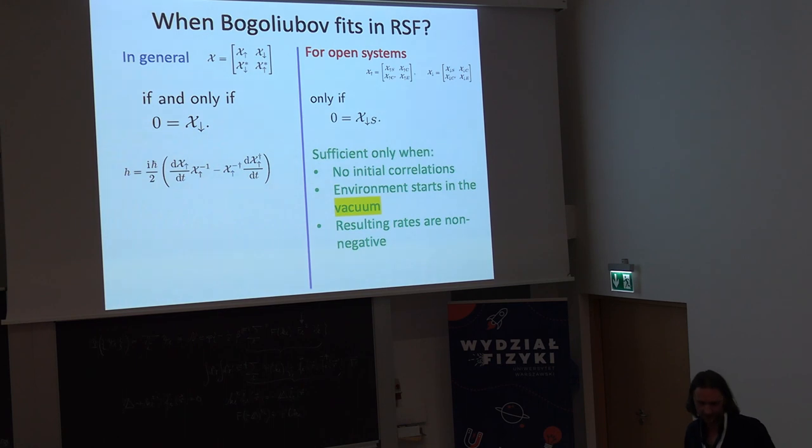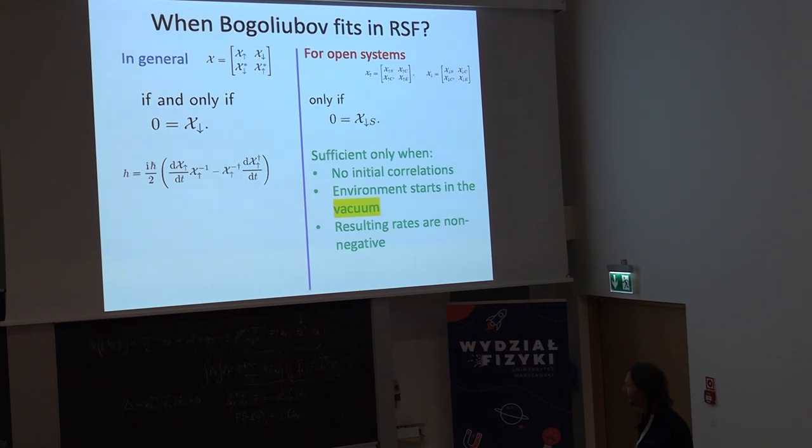But what is interesting is that if we consider this kind of splitting and decide to describe only the system part in this reduced formula. So, environment is environment. We just describe the system. Then, apparently, the same condition only applies to one block, which is not so severe. And also, this is not a sufficient condition. It's not necessary. It can be sufficient under certain assumptions like the environment needs to start in the vacuum state. And there are no initial correlations between the environment and the system. And, most importantly, if we work that out, we have some rates like these damping rates and things like that. And they need to be consistent with the Lindblad equation. So, for instance, the damping rates cannot be negative. They have to be non-negative. And if this happens, then the formalism fits in the Bogoliubov. Transformation fits into the kinetic equation we are discussing.